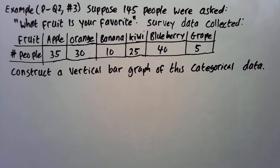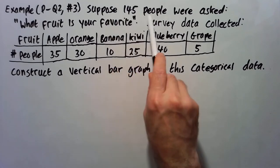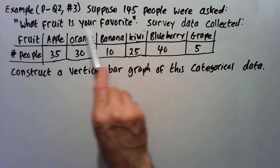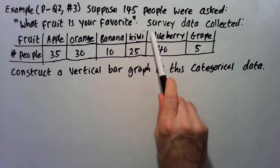Okay, so here's our example. It's from Practice Quiz 2 Number 3. It says, suppose 145 people were asked, what fruit is your favorite? And suppose this is the survey data collected.